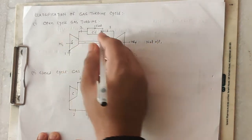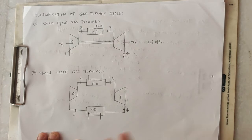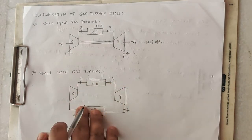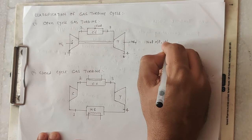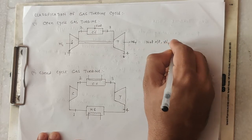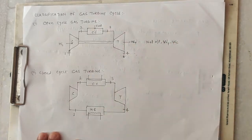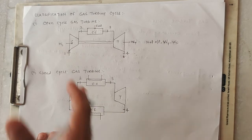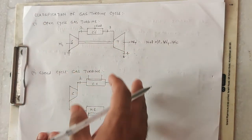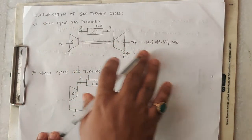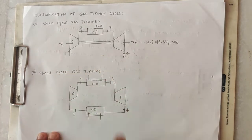Whether we are talking about open cycle or closed cycle, a good amount of work is consumed to run the compressor from the turbine work output. This is the key characteristic about the open cycle gas turbine.